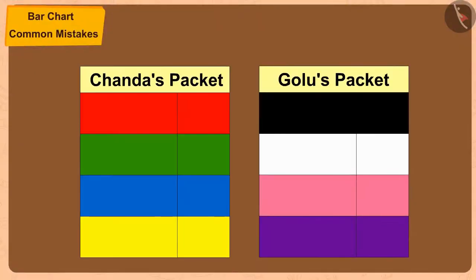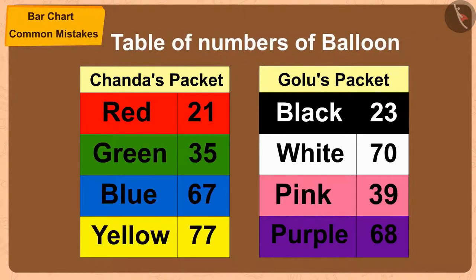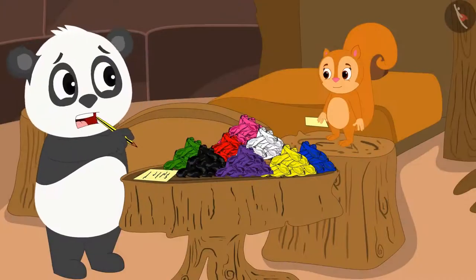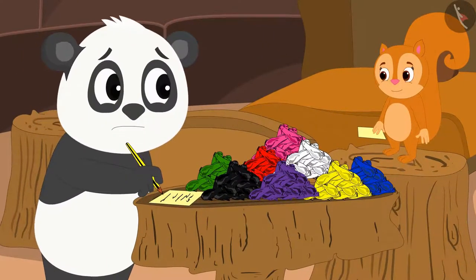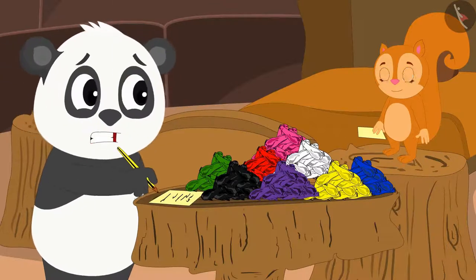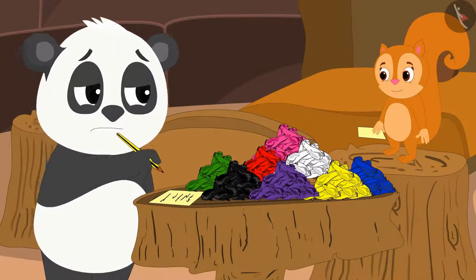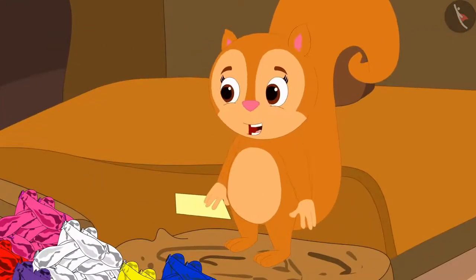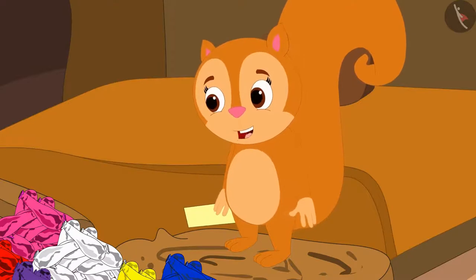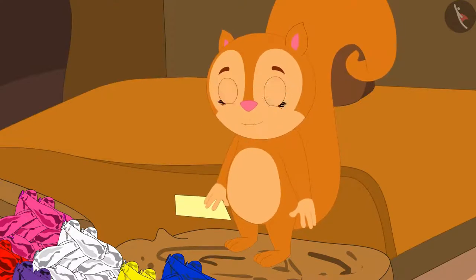Both Golu and Chanda made tables by counting the balloons in their packets. Golu finds it overwhelming: 'Chanda, there are so many numbers here — my head is spinning! Can we do this in some other simple way?' Chanda replies: 'Yes, we can show this information in a very simple way by making bar charts.'